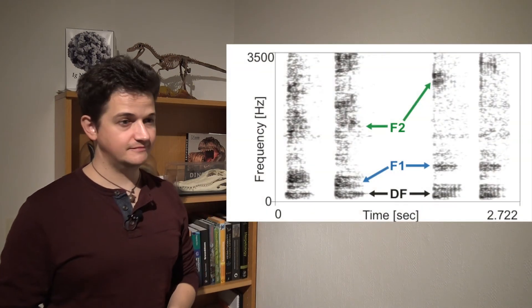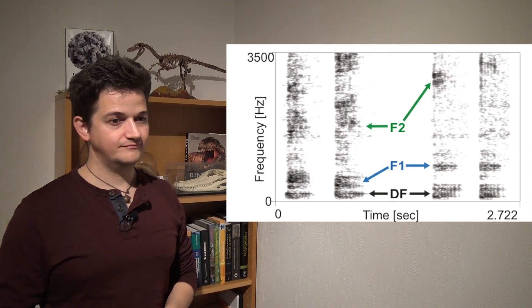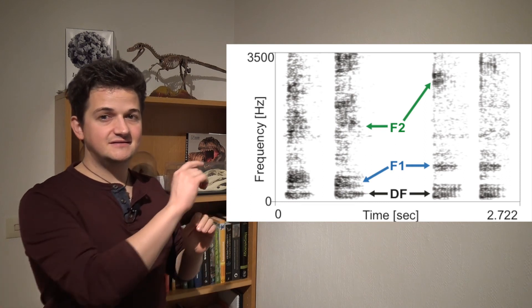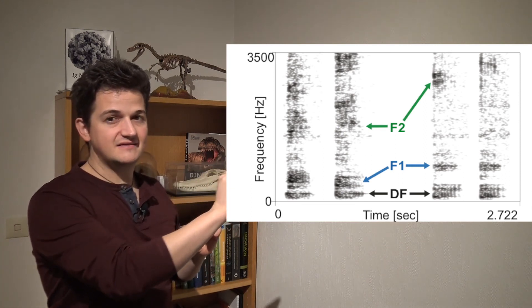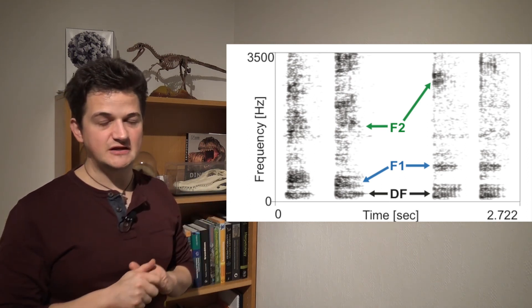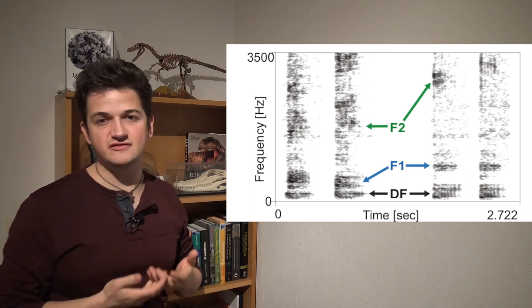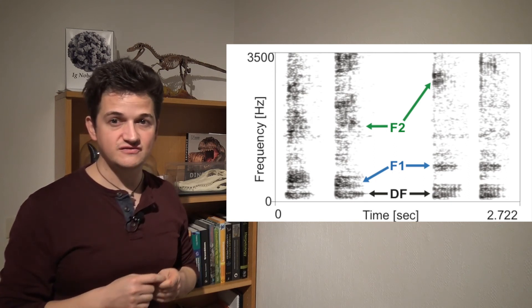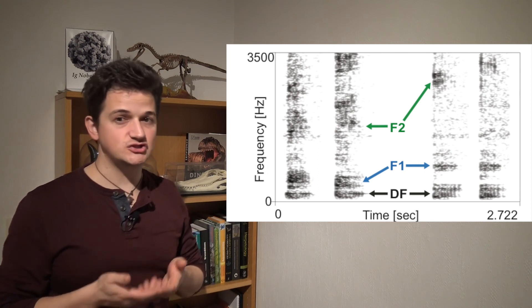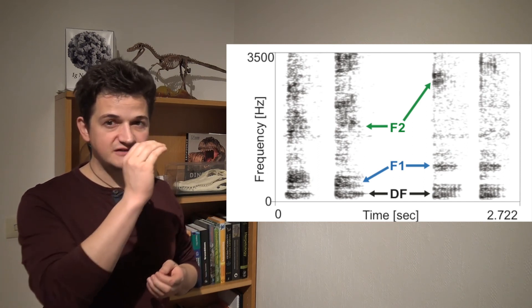And here is what we found. These are two calls in air followed by two calls in heliox. They do sound different, but they also look different. You can see that there are high-energy frequency bands that shift up. But there's also something that remains stable — the dominant frequency, to be precise, the frequency with the most energy — it stays the same in both conditions. This most probably means it's caused by tissue vibration and not a resonance. But those frequencies that shift up must be resonances: formants.